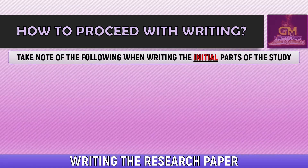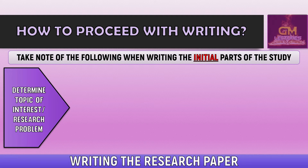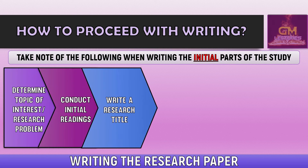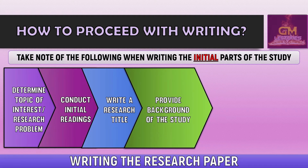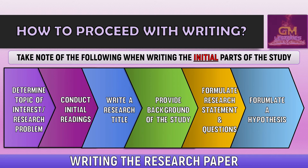Furthermore, it is important to take note of the following when writing the initial parts of the study — the first few parts of the first chapter of a research paper. We start with determining the topic of interest or the research problem, followed by conducting initial readings. Then we write a research title, followed by providing a background of the study, formulating the research statement and questions, and lastly, formulating a hypothesis.